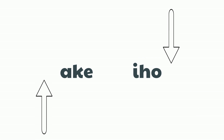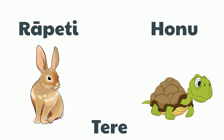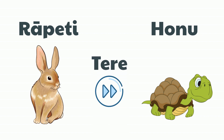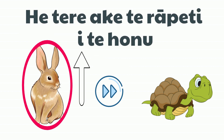Let's practice while also learning some new words. Rāpeti means rabbit. Honu means turtle. Tere means fast. How do you say 'The rabbit is faster than the turtle'? He tere ake te rāpeti i te honu.